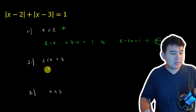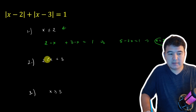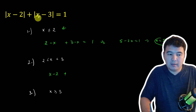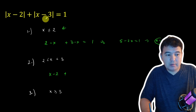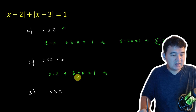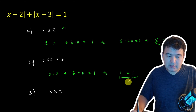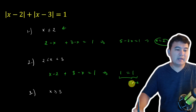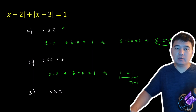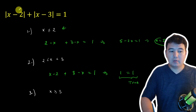Now let's look at numbers where x is strictly greater than 2 and less than 3. Since x is greater than 2, the expression x minus 2 is positive, so we open it as x minus 2. But since x is less than 3, x minus 3 is negative, so we open it as 3 minus x. This gives x minus 2 plus 3 minus x equals 1, which simplifies to 1 equals 1 — a true result. This makes the expression an identity, meaning any number between 2 and 3 works as a solution. You could plug in 2.1, 2.3, 2.5 — any number works.